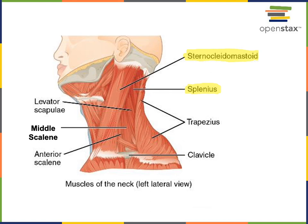Here we can see the middle scalene and anterior scalene. There are three scalene muscles on each side: an anterior, middle, and posterior scalene. The posterior scalene is located just deep to the levator scapulae, and so we can't see it in this illustration.